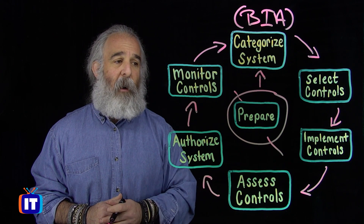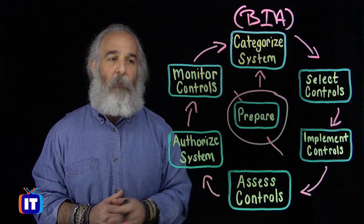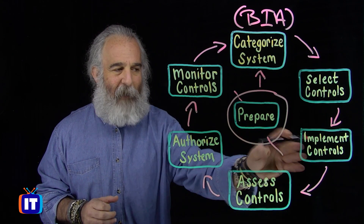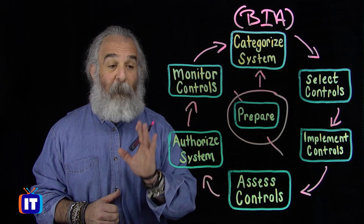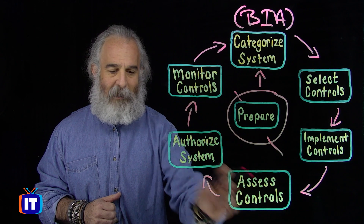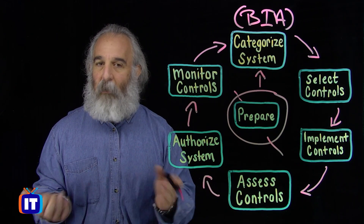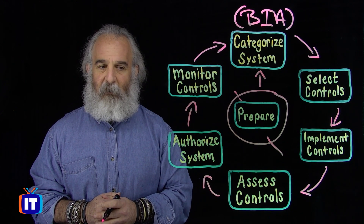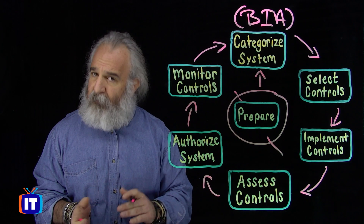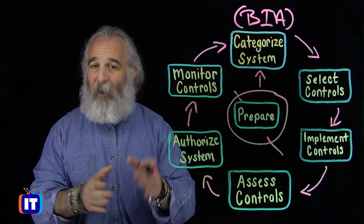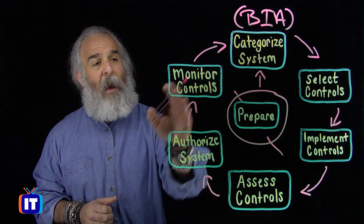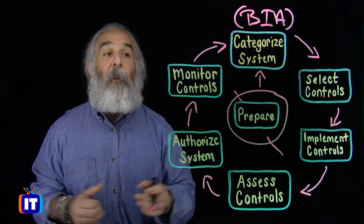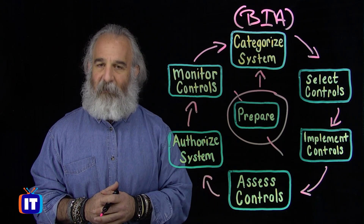In step four we go ahead and implement those controls — put them into practice, attach them to one or more systems, and begin to understand how they are operating. Then, as we move out of implement, we're going to measure that effectiveness formally in our fifth step where we assess the controls, down at the six o'clock position. We understand quantifiably and qualitatively how they are behaving and whether they are doing the things they need to do.